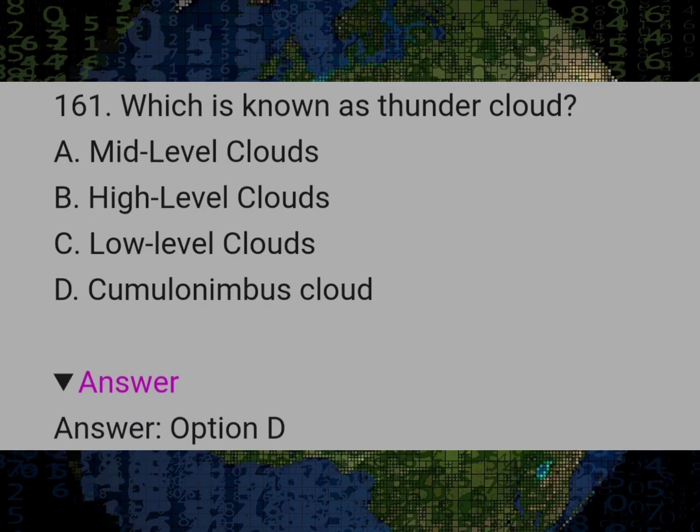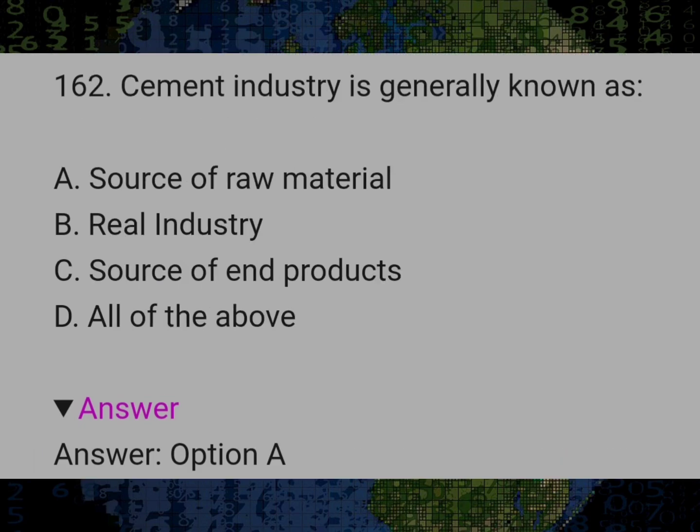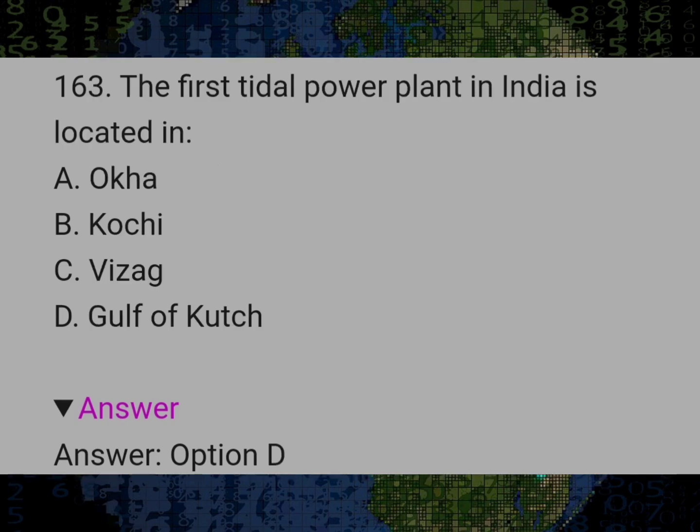Which cloud is known as thunder cloud? Answer D: Cumulonimbus cloud. Cement industry is generally known as? Answer A: Source of raw material. The first tidal power plant in India is located in? Answer D: Gulf of Kutch.